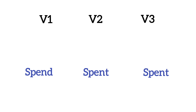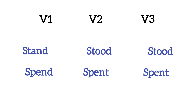Next is 'spend' — spend has two meanings: kharcha karna (to spend money) and samay bitaana (to spend time). Its second form is 'spent' and third form is also 'spent'. When V2 and V3 are the same, you don't have to work as hard to learn them.